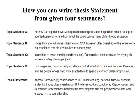Now, how you can write a thesis statement from four given sentences. Topic sentence A: Andrew Carnegie's innovative approach to steel production helped him amass an unprecedented personal fortune from which he could pursue many philanthropic endeavors. Topic sentence B: Those things for which he is best known, however, often overshadow the tense working conditions that his workers had to endure. Topic sentence C: In addition to tense working conditions, Carnegie has been criticized for paying his workers inadequate wages. Topic sentence D: Low wages and harsh working conditions strained labor relations between Carnegie and the people whose hard work enabled him to spend lavishly on philanthropy.